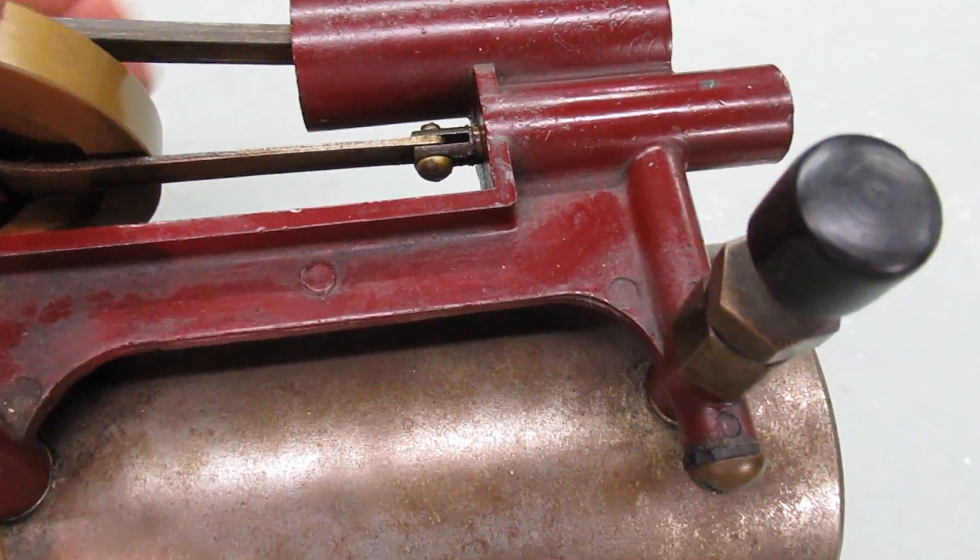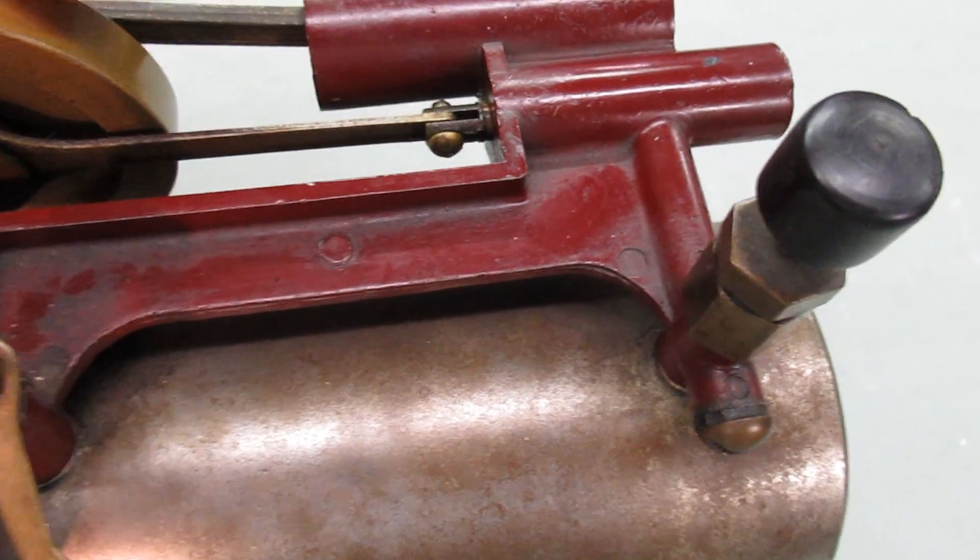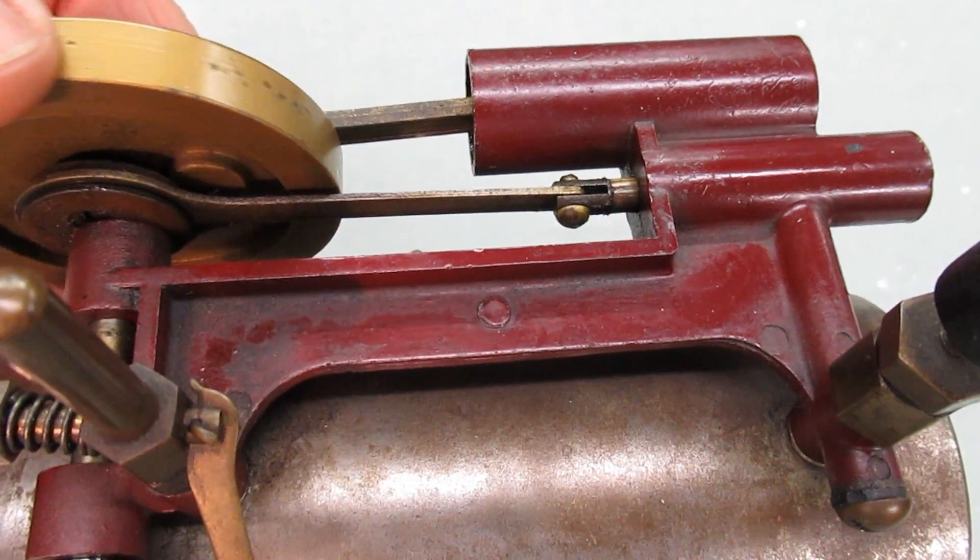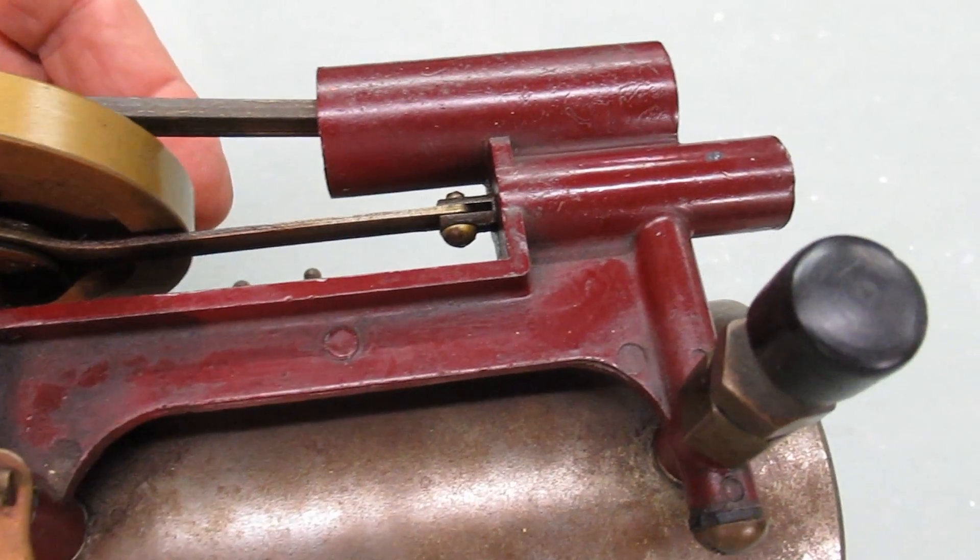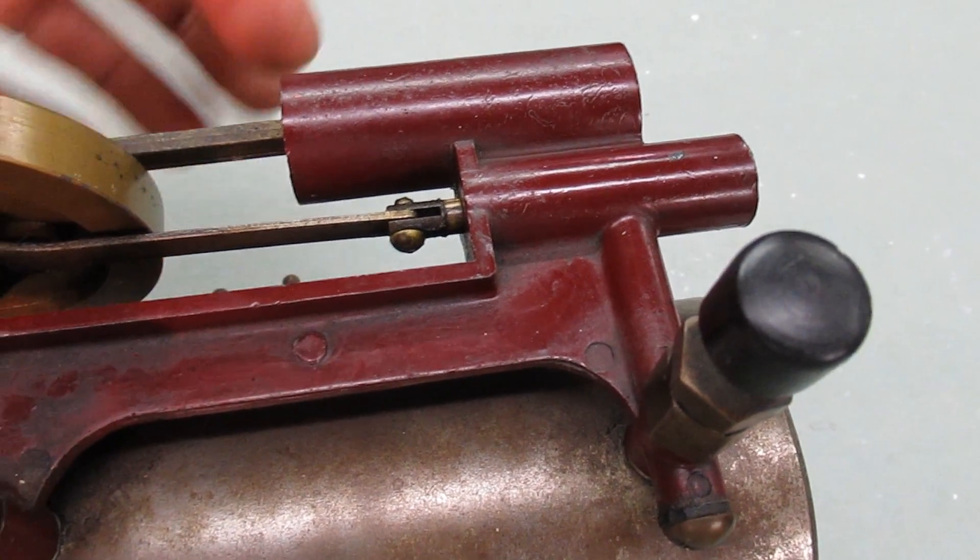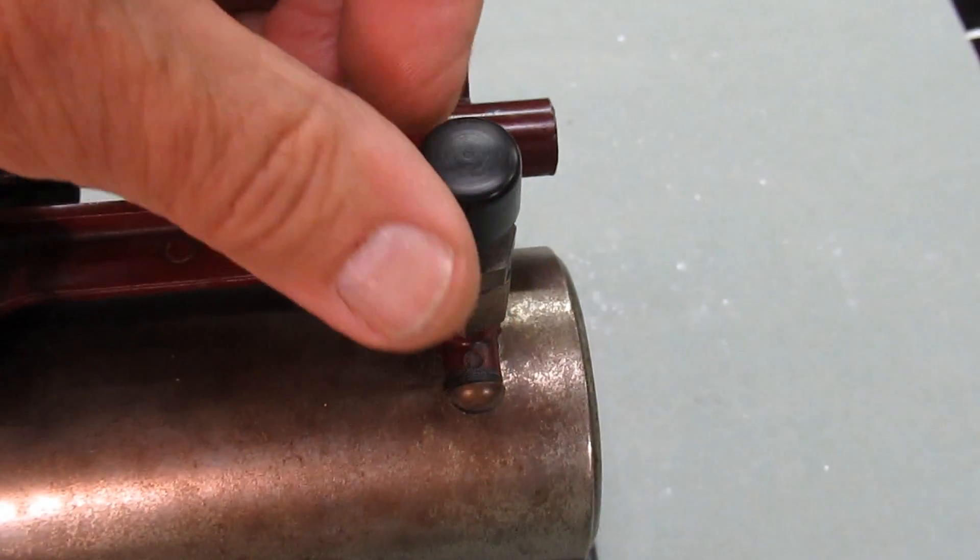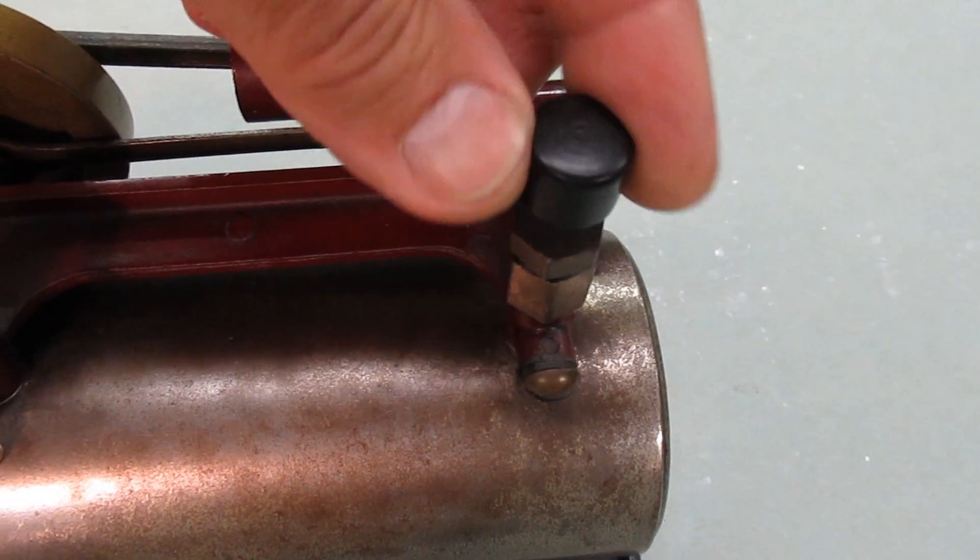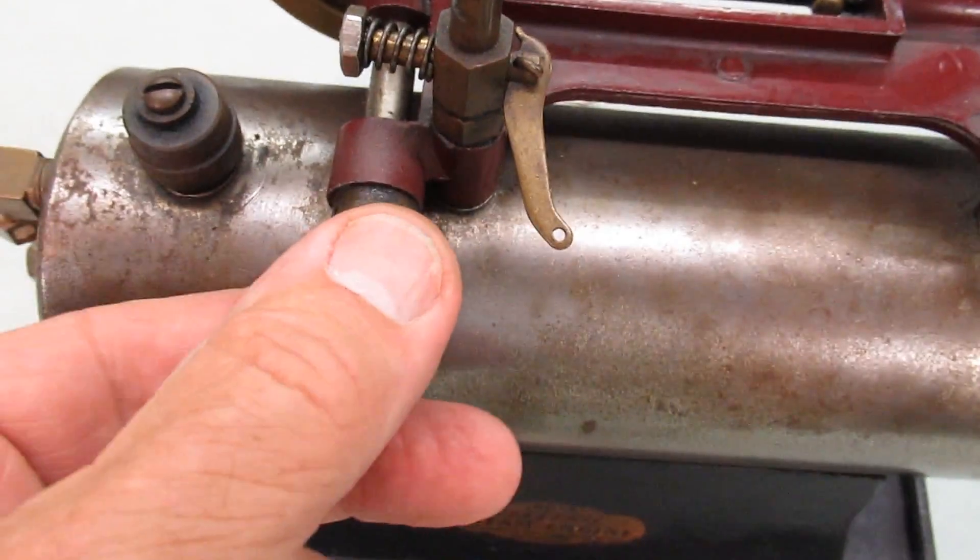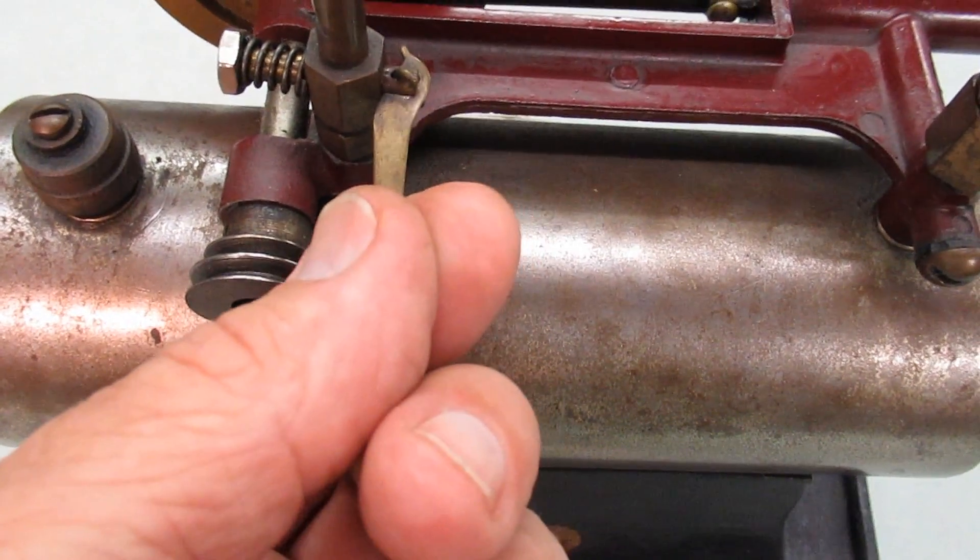So when it's closed like this, the steam is off, the flywheel continues to go around, and when it comes back here, it opens up and the steam gets pushed in and pushes the flywheel. You can adjust the speed with this knob right here, and this is a drive pulley, and this is the whistle.